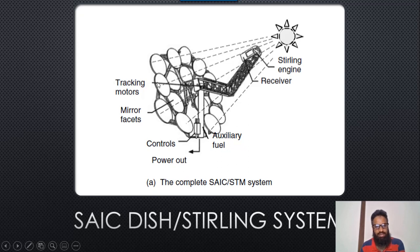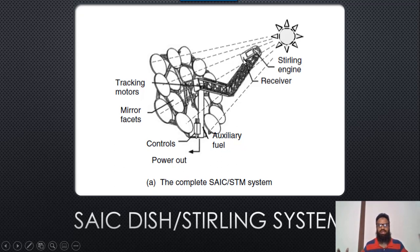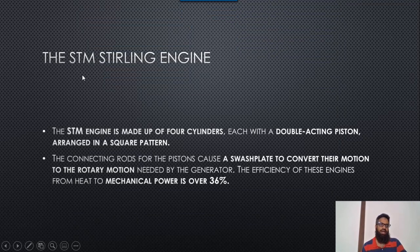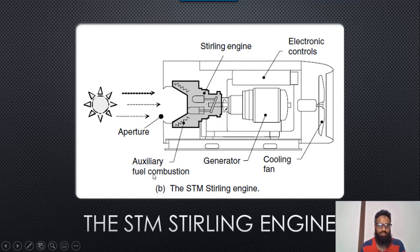The SAIC system includes tracking mirrors, mirror facets, and a control mechanism or actuators which control the direction of the dish according to the direction of the sun. There is also a power output line, auxiliary fuel, and a receiver where sunlight is concentrated; from this receiver, heat is transferred to produce electricity. The second type is the STM Stirling engine, which is made up of four cylinders each with a double-acting piston arranged in a square pattern. The connecting rods cause a swash plate to convert their motion into rotary motion needed by the generator. The efficiency of this engine is approximately 36 percent.